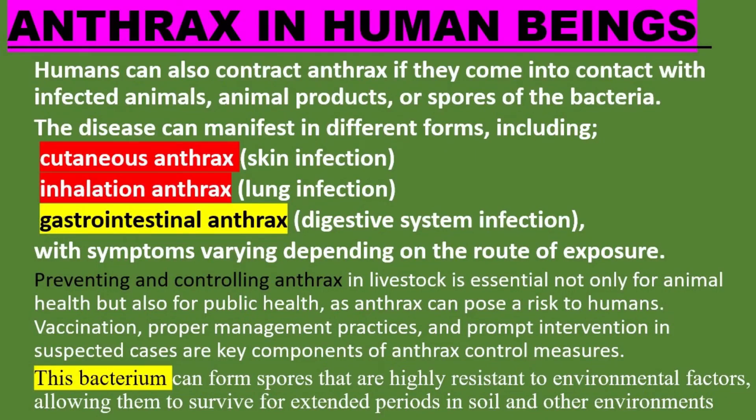Anthrax in human beings: Humans can also contract anthrax if they come into contact with infected animals, animal products, or spores of the bacteria. The disease can manifest in different forms, including cutaneous anthrax (skin infection), inhalation anthrax (lung infection), and gastrointestinal anthrax (digestive system infection), with symptoms varying depending on the route of exposure.